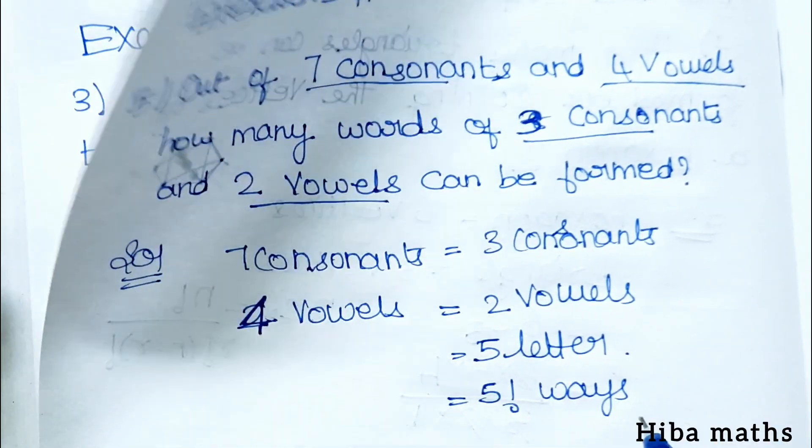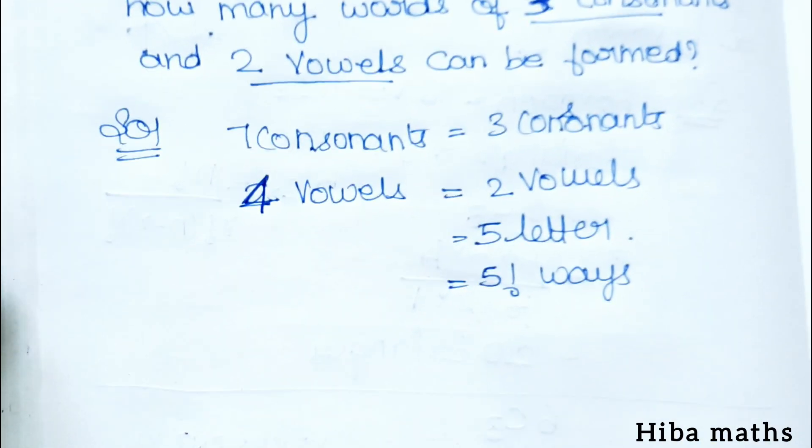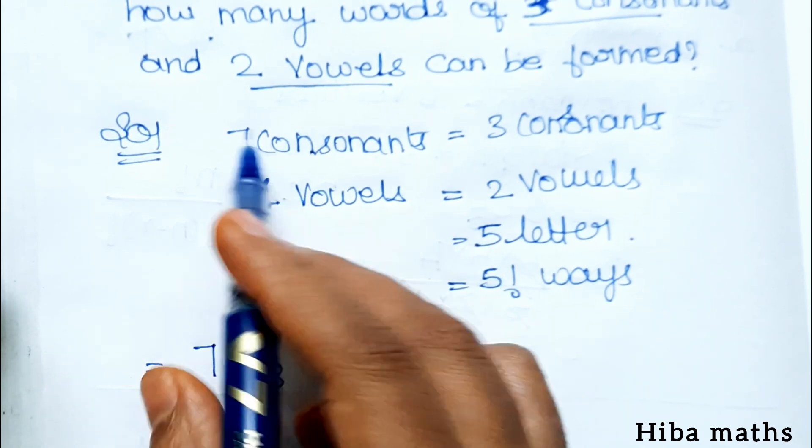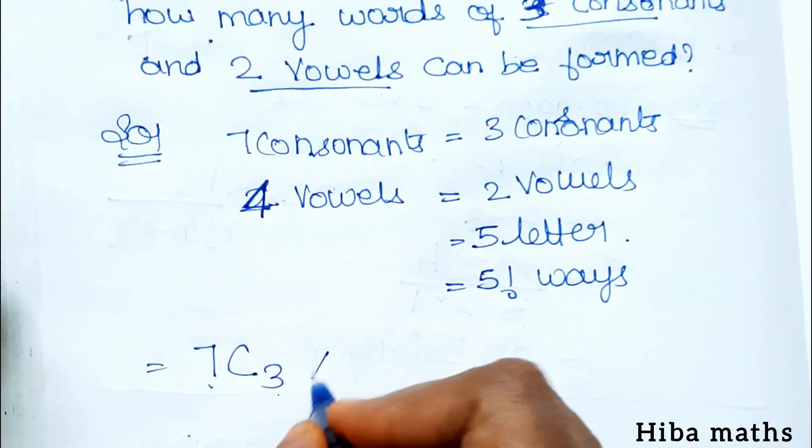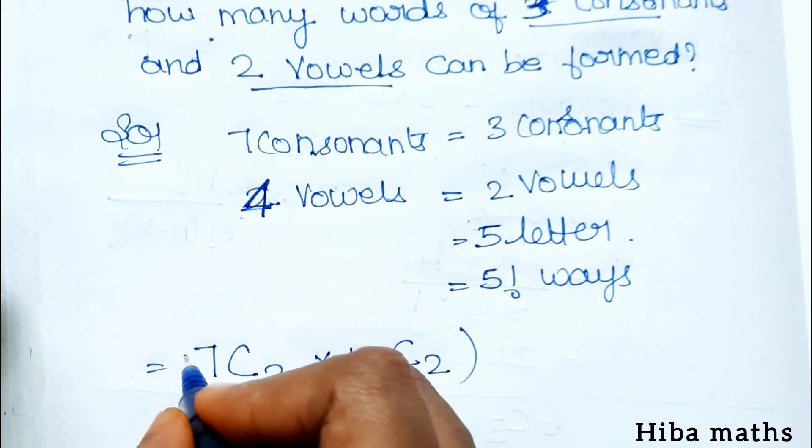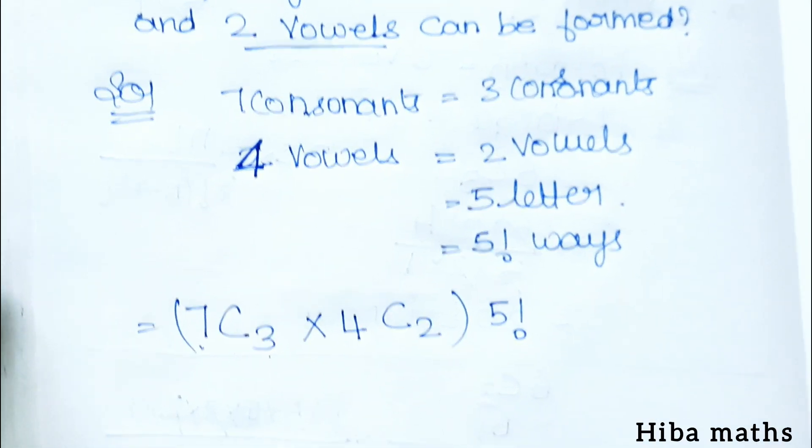Now we write this formula. How many words are: 7C3, total 7 select 3, into 4C2, 4 vowels select 2, into 5 factorial. Clear.